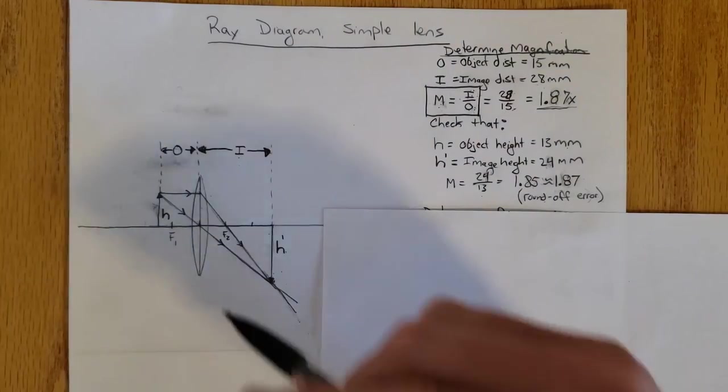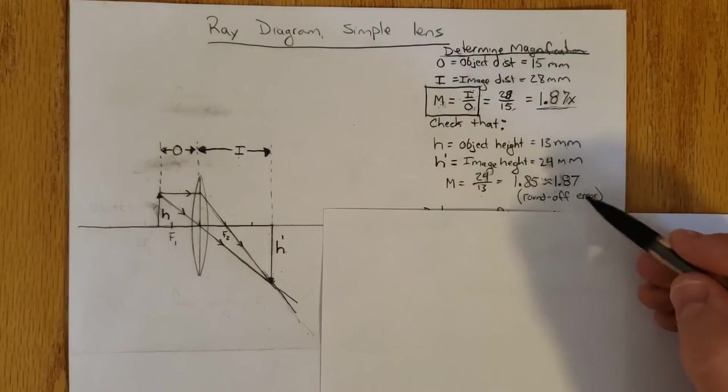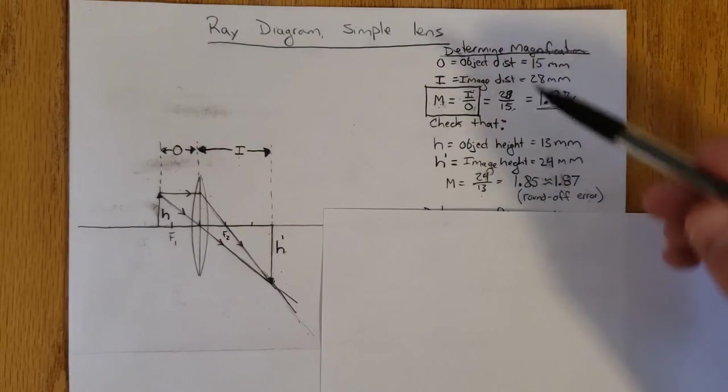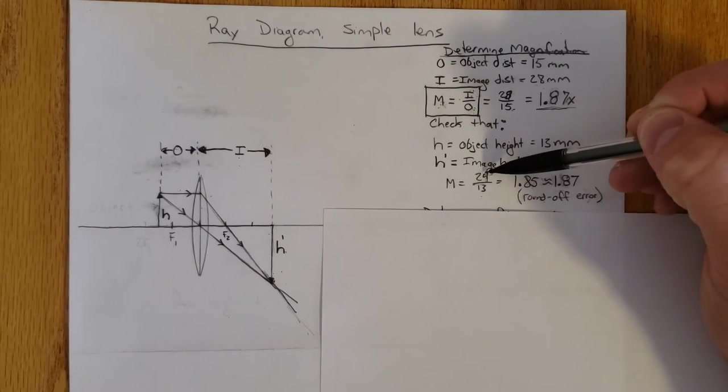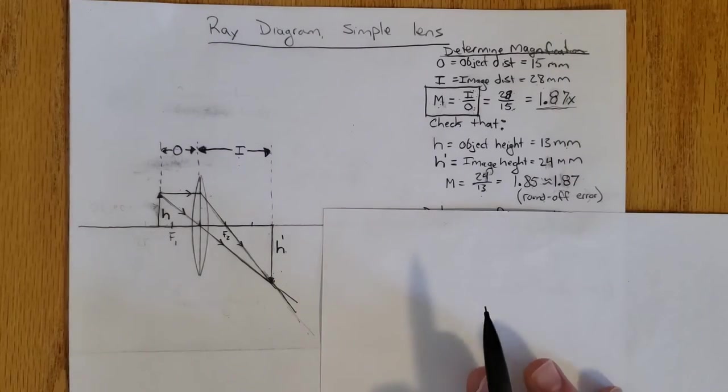The difference between these two is just round-off error because I'm using whole millimeters. If I could measure down to tenths of a millimeter, these would agree exactly. So whether you use i over o or h prime over h, you get the same answer.